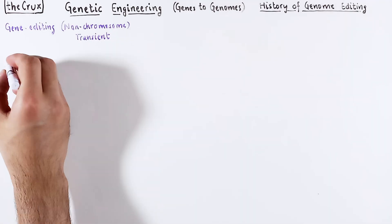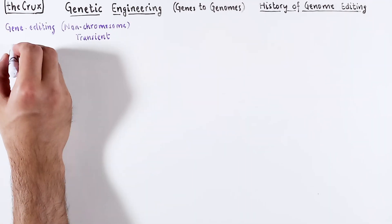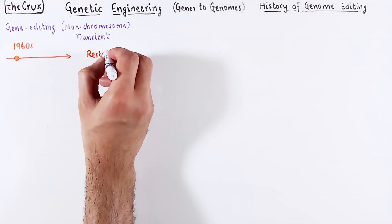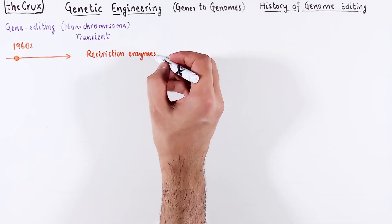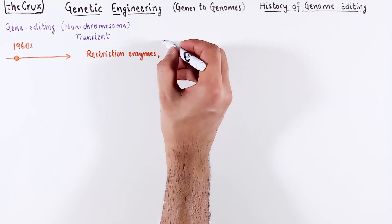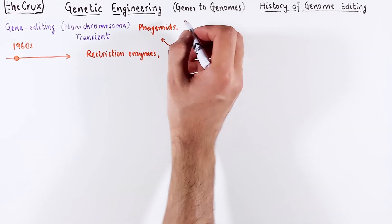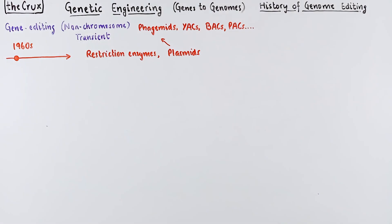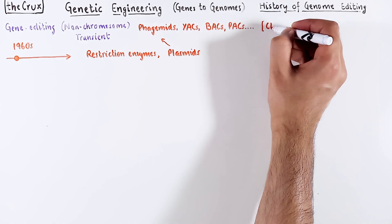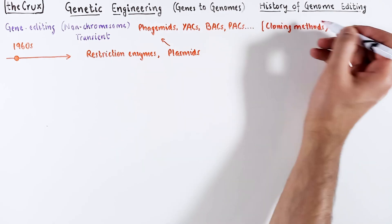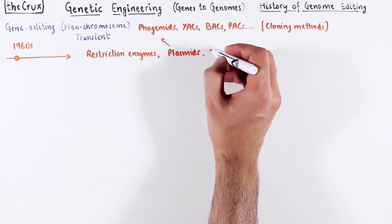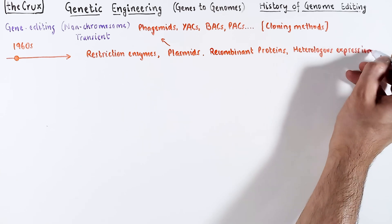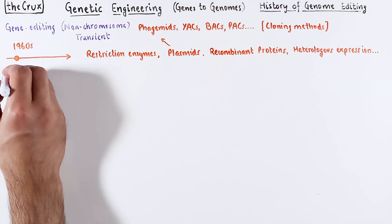This started in the 1960s with the discovery of restriction enzymes, construction of plasmids, phagemids, YACs, BACs, PACs, and many more breakthroughs in cloning methods, in recombinant protein expression in heterologous systems.